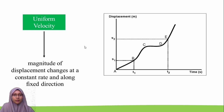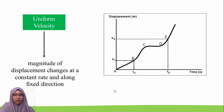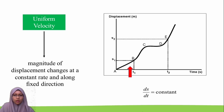Lastly, uniform velocity means the magnitude of displacement changes at a constant rate along the same direction. In this example, the uniform velocity is from point A to B, and the gradient of the displacement-against-time graph is constant.